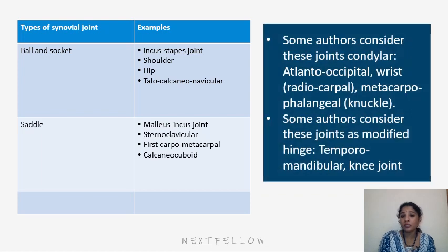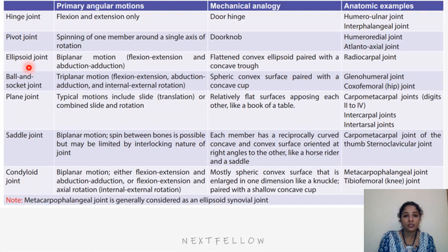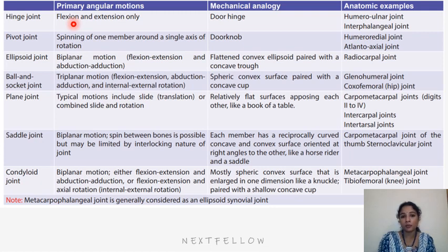The knee also includes a saddle joint between the femur and patella. Some authors consider condylar joints like the atlanto-occipital, wrist, and metacarpophalangeal joints as a condylar variety, while others classify joints like the temporomandibular and knee as modified hinge joints. Looking at each joint type, the hinge joint allows flexion and extension only in a single plane — the mechanical analogy is a door hinge — examples being the elbow (humero-ulnar joint) and interphalangeal joints.